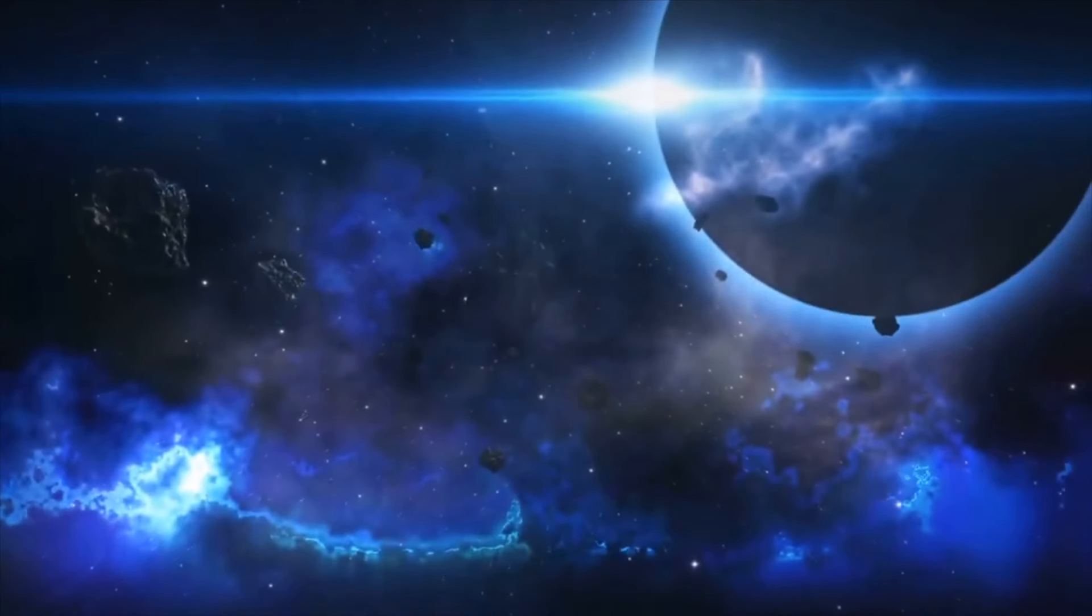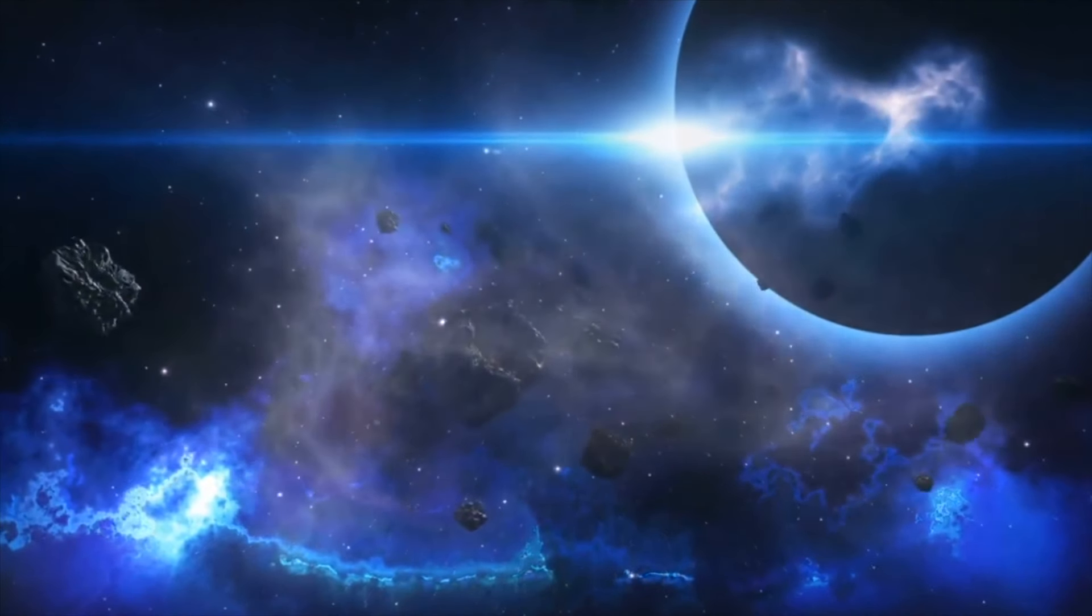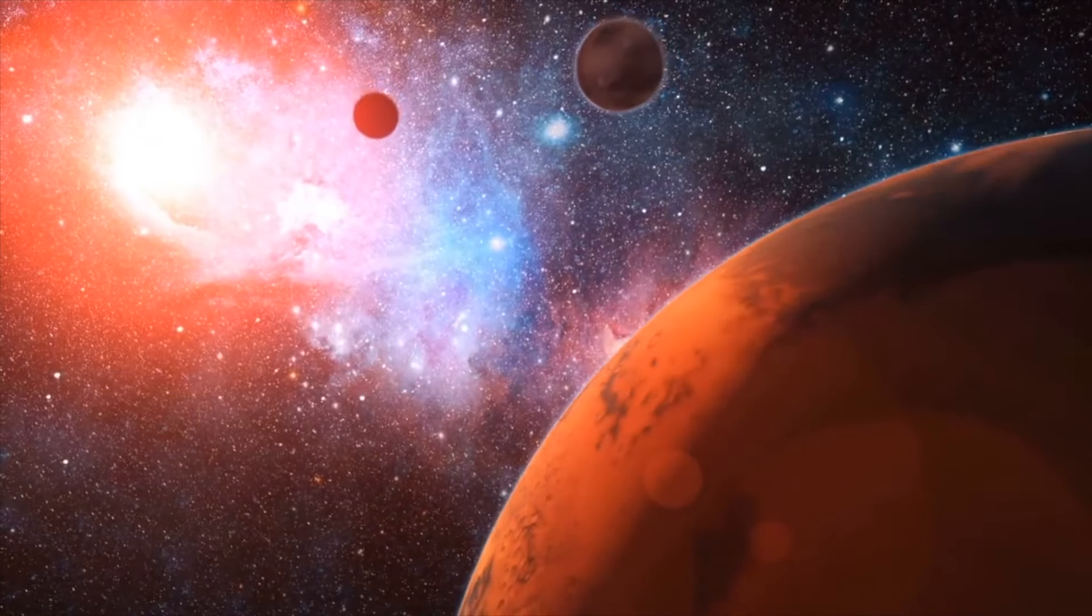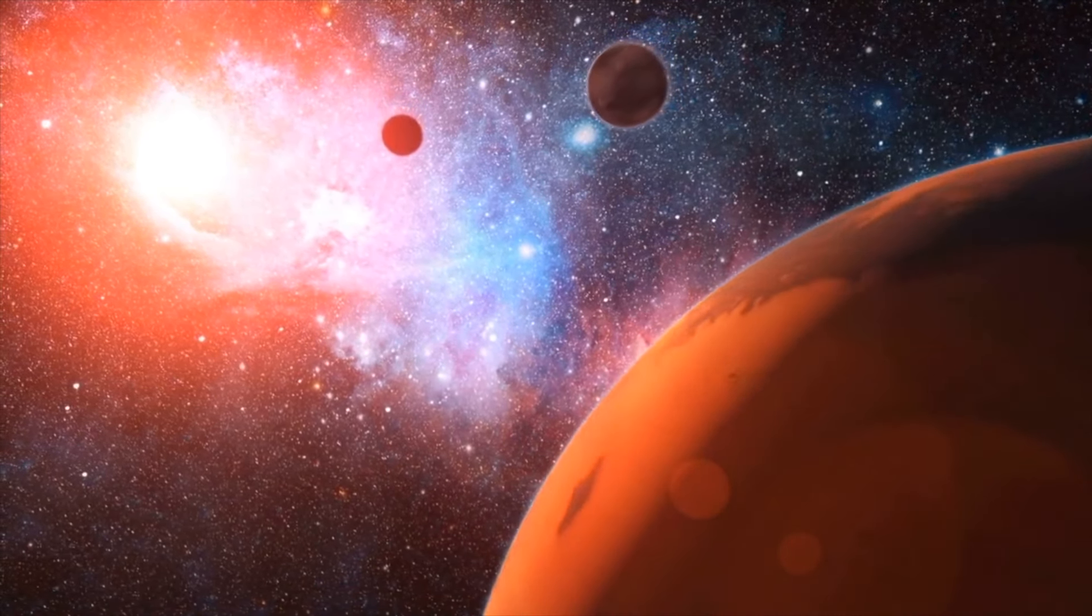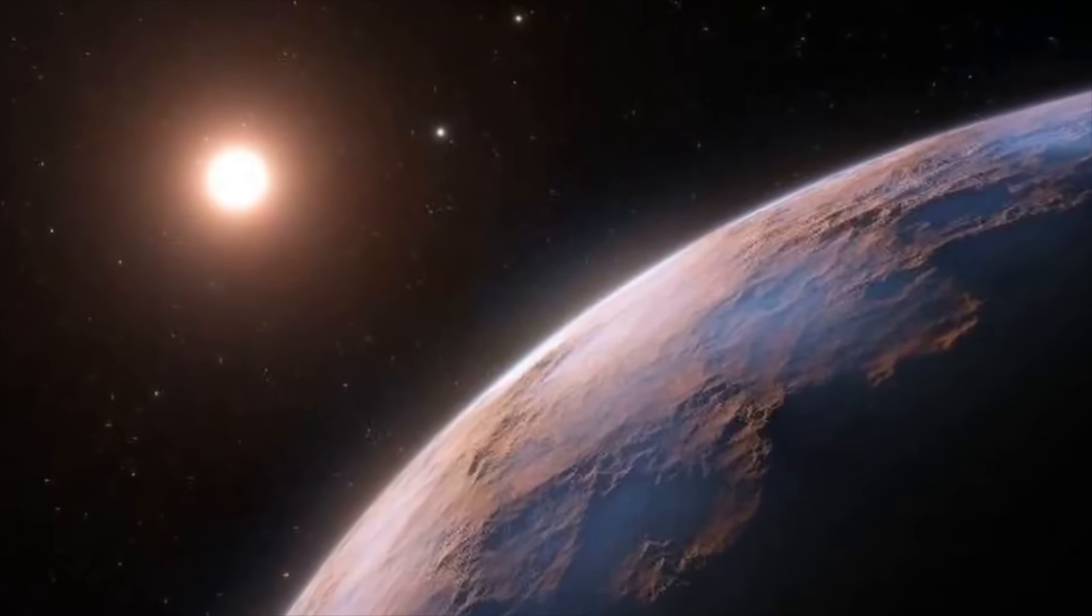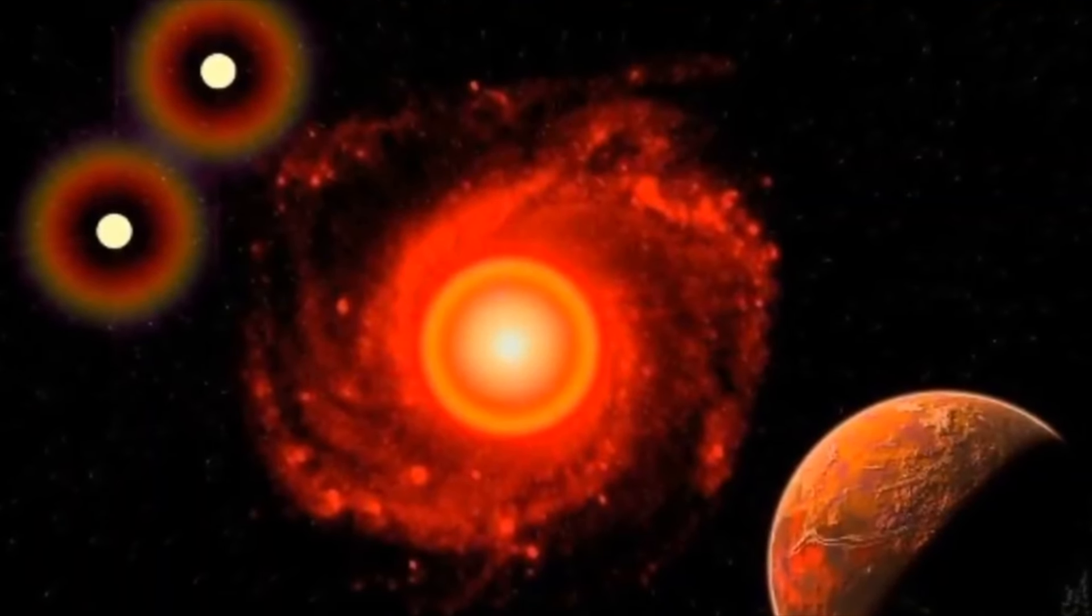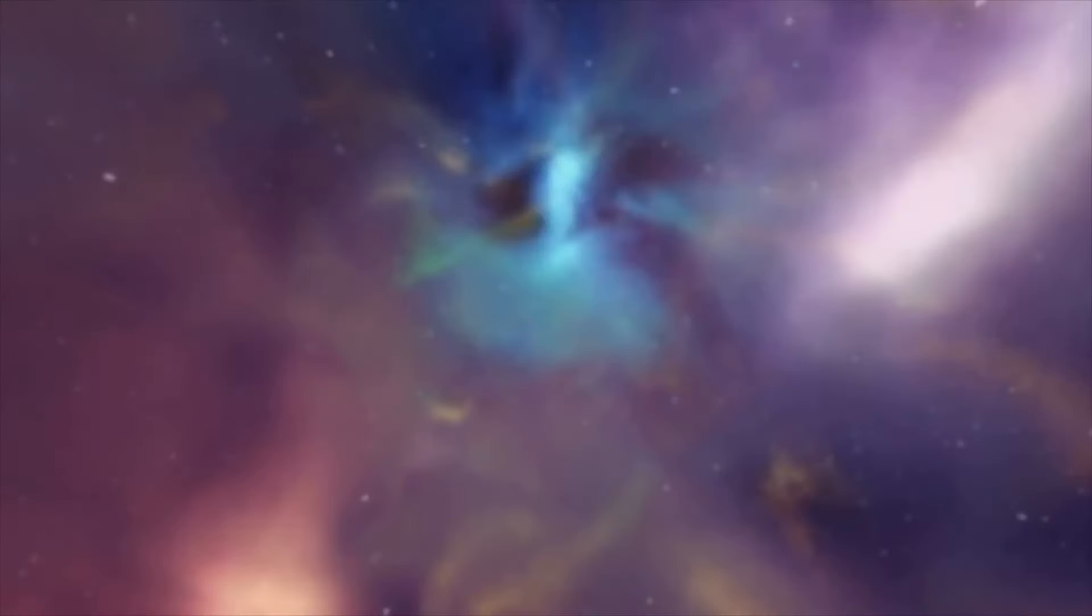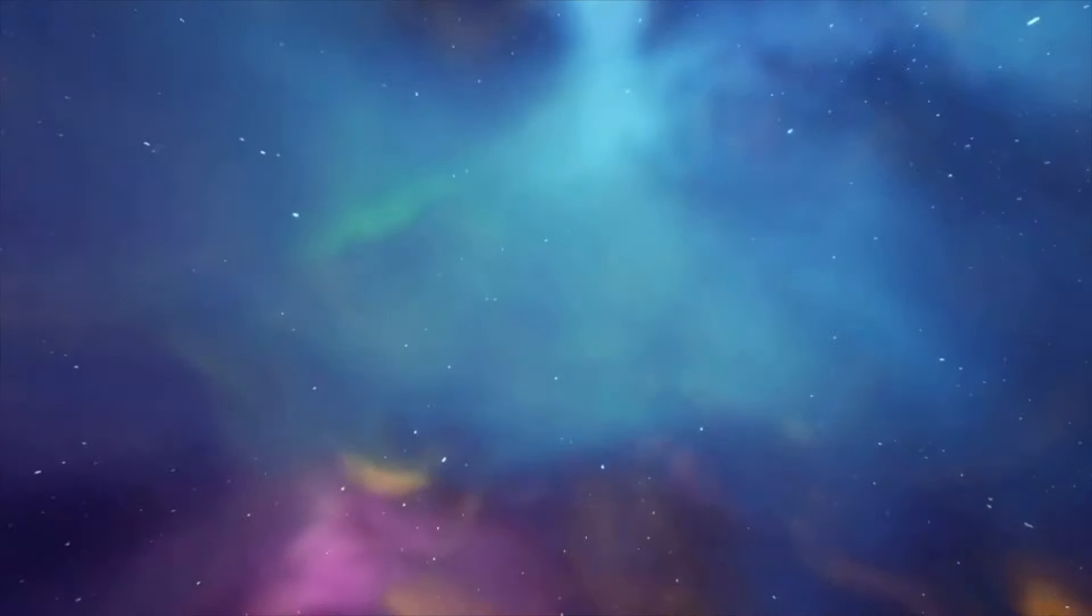Yet what truly sets it apart is its intimate proximity to its host star, nestled just 20 times closer than Earth is to the Sun. This closeness leads to extremes that defy our planetary norms, with one side eternally bathed in the brilliance of its star, an everlasting daylight extravagance, while the flip side endures perpetual darkness, a cosmic midnight where the Sun's warmth becomes a distant memory. The cosmic ballet of Proxima Centauri b unfolds around its host, the red dwarf Proxima Centauri, forming a trio with Rigel Kentaurus Centauri A and B, and the spotlight stealer Proxima Centauri. This trio creates the cosmic equivalent of a neighboring star system, waltzing closest to our solar system.